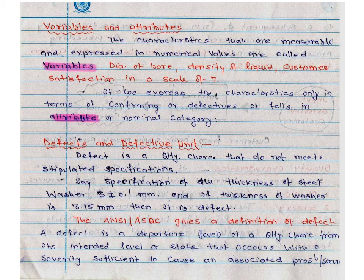In a shaft, variables include the diameter of the bore and length of the shaft. For a liquid like petrol, diesel, or gasoline, we can measure quality by density. Customers can detect quality with the help of variables. If we can only express characteristics in terms of conforming or defective — meaning we cannot measure some characteristics numerically — they fall into the category of attributes.